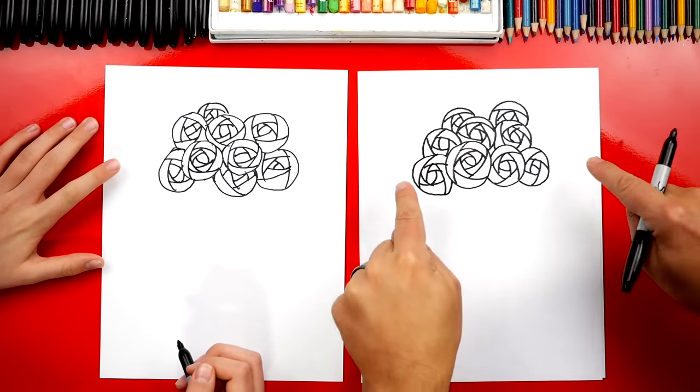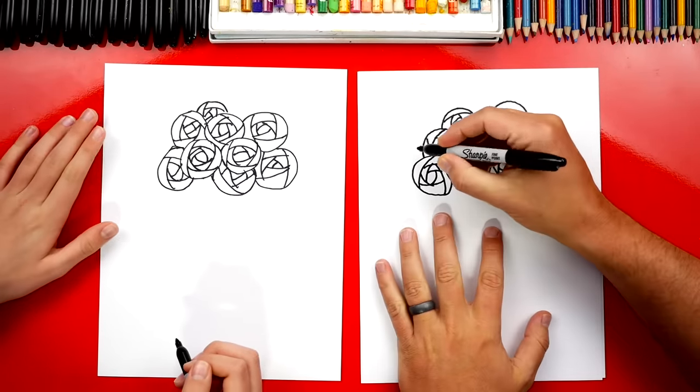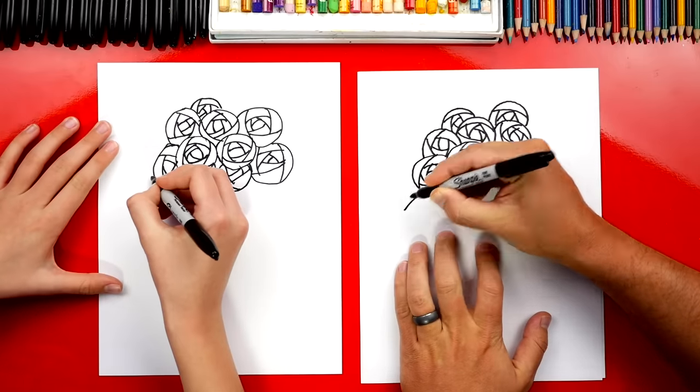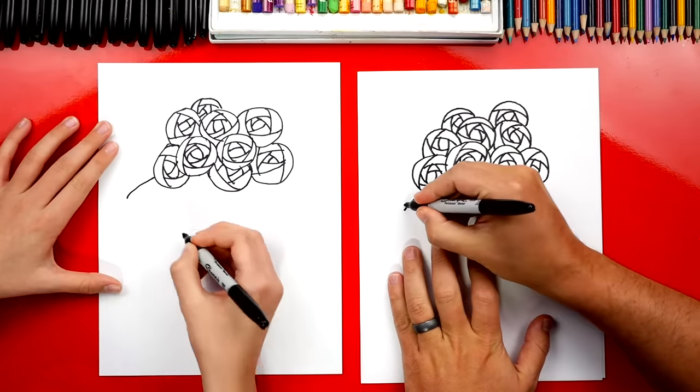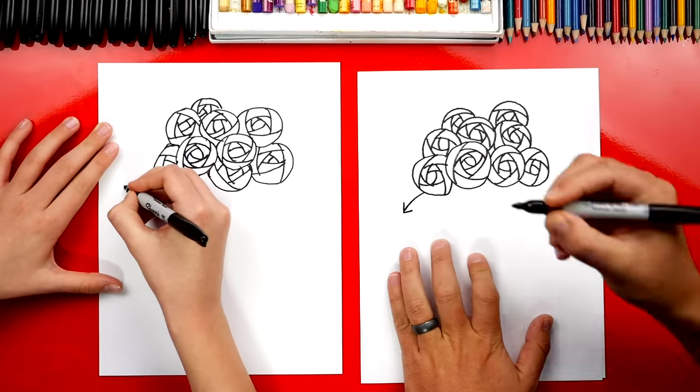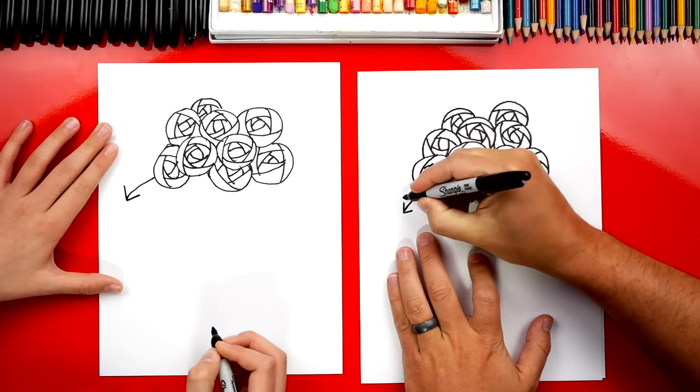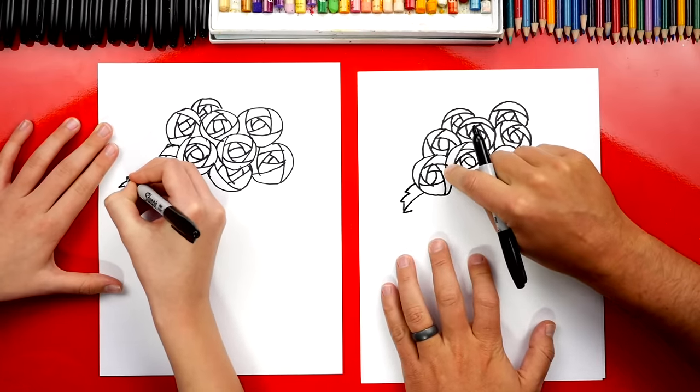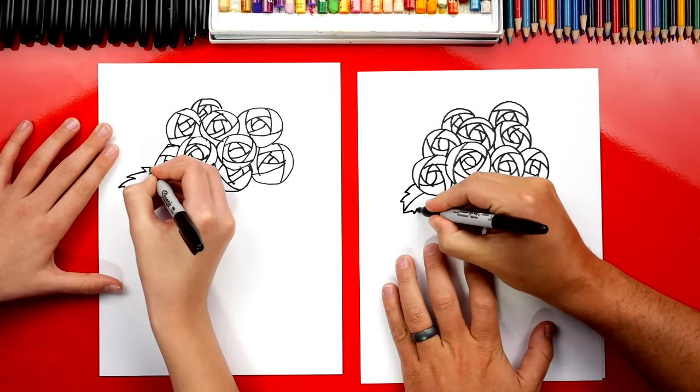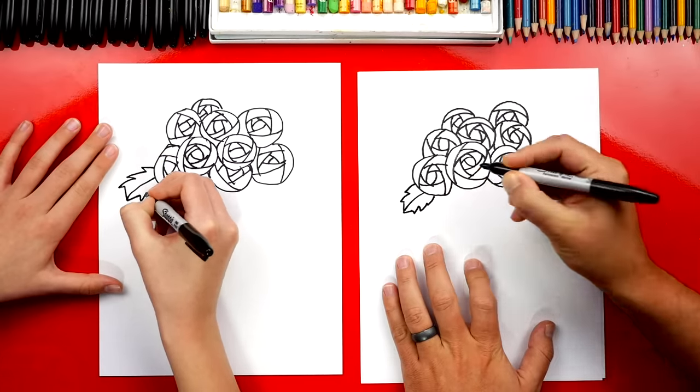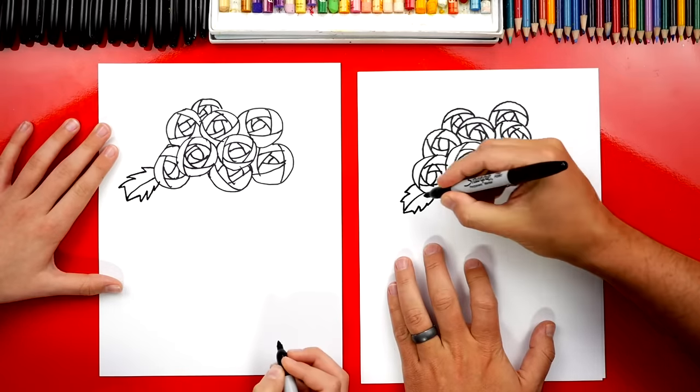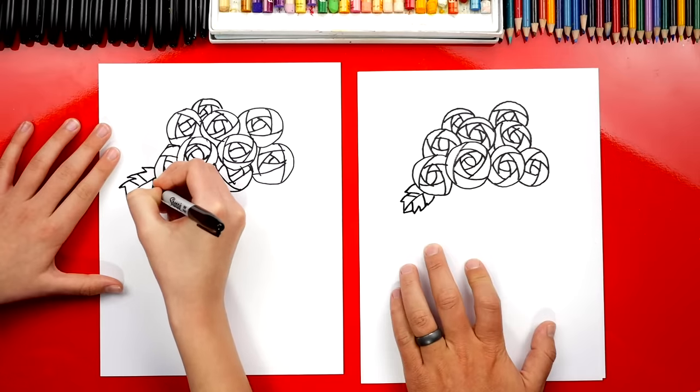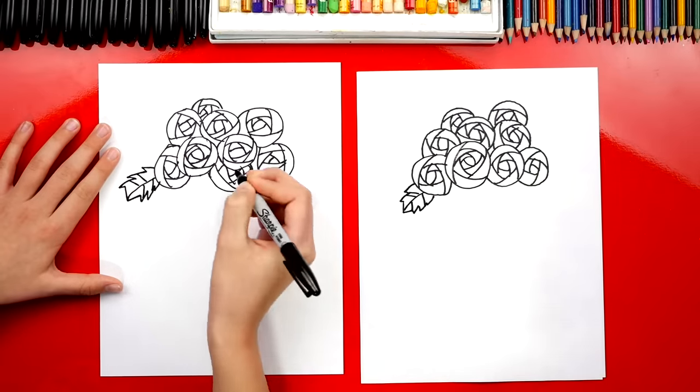Next we're gonna draw a few leaves sticking out from behind the roses. So first let's draw a leaf right here. We're gonna draw one coming down. Then we can draw on the very end we're gonna draw a V. Looks like an arrow. Then we're gonna draw a zigzag line curving into the rose. And we can do the same thing on the other side. There we go. Now we could also add a few extra lines coming out from the center vein to make it look more like a leaf.